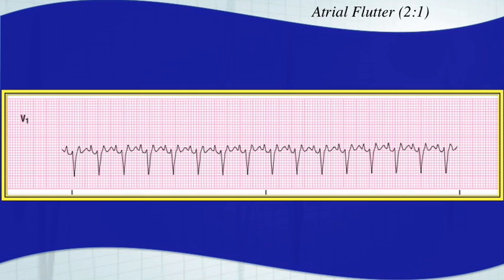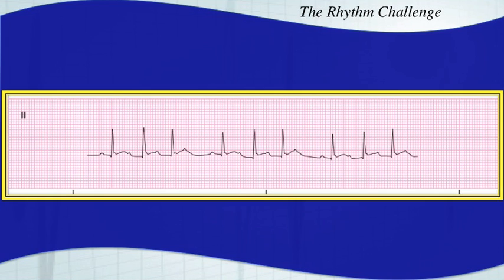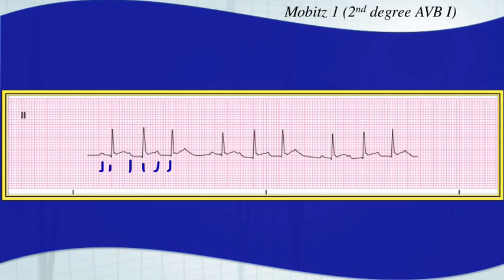This one is a Mobitz I — another second degree type I AV block, sometimes called Wenckebach phenomenon. You have that prolonging of the PR interval until you have a P wave with no QRS complex. Prolonging, P wave, no QRS complex. This is a Mobitz I.